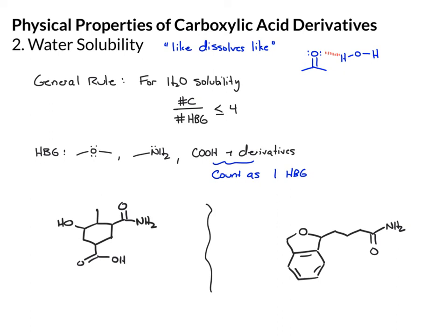In this first example, count the carbons first. In the ring there are six, seven, eight, nine — so we have nine carbons. Then our number of hydrogen bonding capable groups: we have the OH, we have this amide which counts as one, and the carboxylic acid which counts as one. So we have three. Nine divided by three is three. That means there's enough polarity in this molecule to counteract the greasiness of the hydrocarbons. This number is less than or equal to four, so we would expect this molecule to be water soluble.